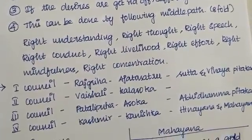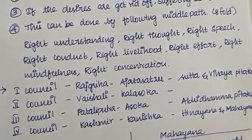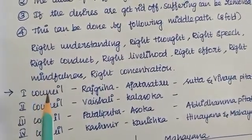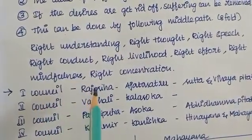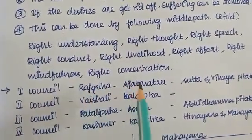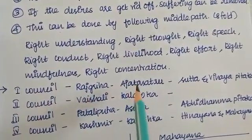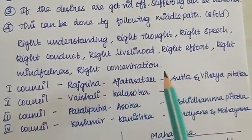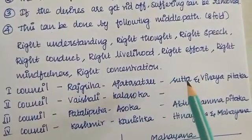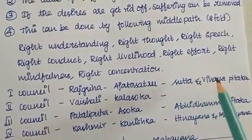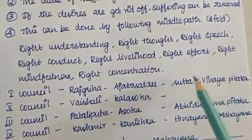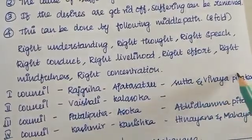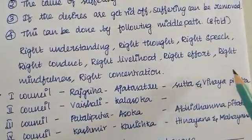In the Buddhist councils, there are four councils. The first council is Rajgriha. What is the first council? It compiled Sutta and Vinaya, which are Buddhist literature.